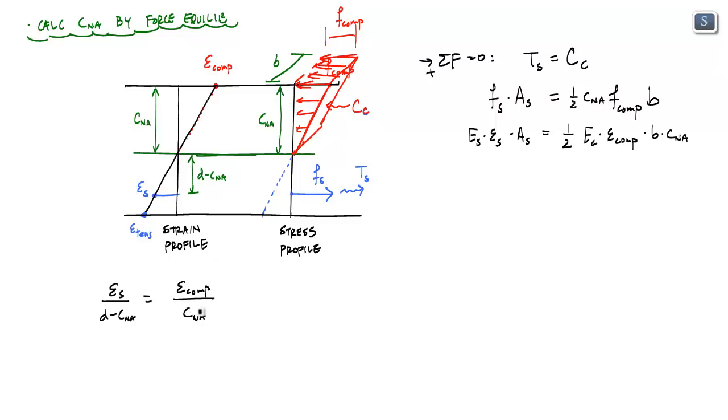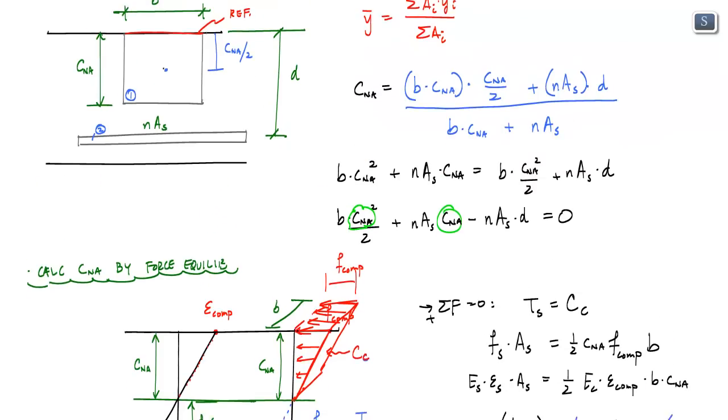And I can go ahead and substitute for the strain in steel. And so for here, for the strain in steel, I would just put ES times AS. And for that strain in steel, I'm going to put D minus CNA over CNA times the strain in compression is equal to one-half EC times epsilon compression times B times CNA. What do you know? I have these strains in compression canceling out. And again, I'm left with one equation and one unknown.